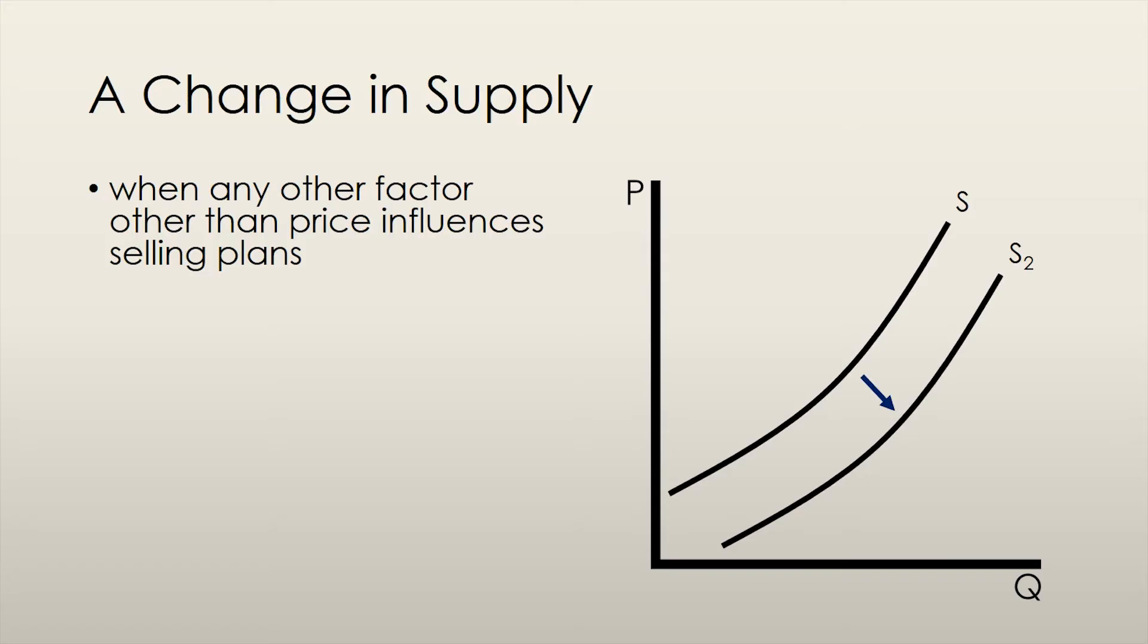Just as we saw in the lecture about demand theory, we can observe shifts in the supply curve as well. We say that supply changes when any factor that influences selling plans, of course other than price, changes. This causes the quantity supplied at any given price to either increase or decrease depending on what the situation is.